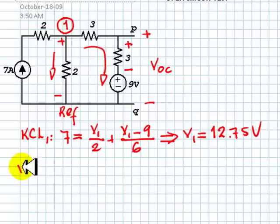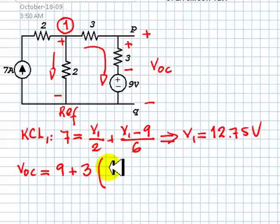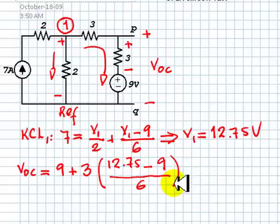So, we say the open circuit voltage is 9 volts, plus 3 ohms, that multiplies this current. And that current is V1 minus 0 minus 9 divided by 6. V1 is 12.75 minus 9 divided by 6. That is the current.